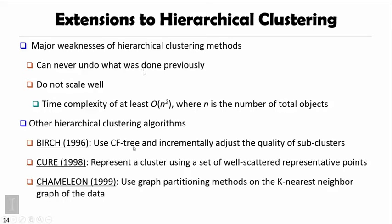There are some developments on other hierarchical clustering algorithms. In this lecture, we're going to introduce three of them. One is BIRCH, developed in 1996. It uses a micro clustering and macro clustering idea, using a clustering feature tree and incrementally adjusting the quality of subclusters.